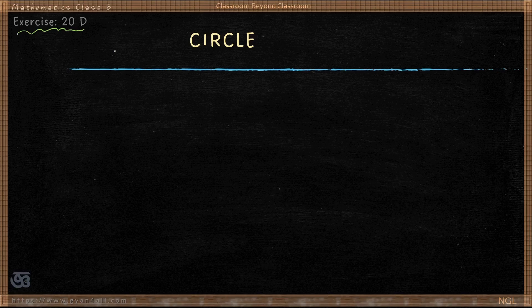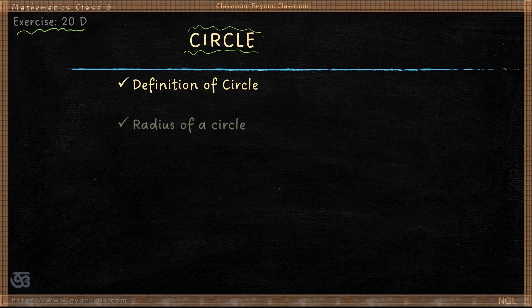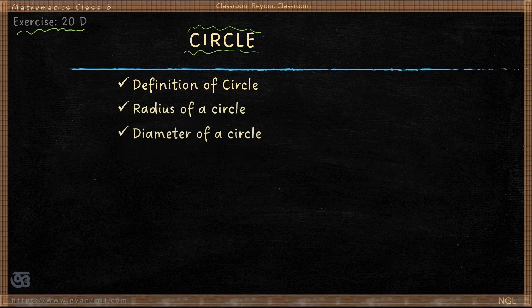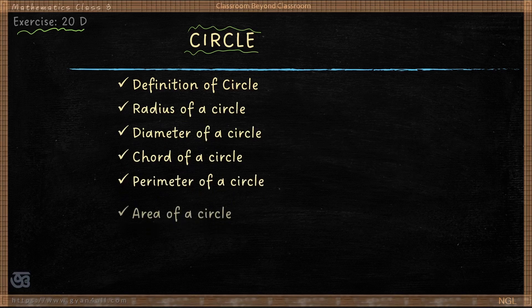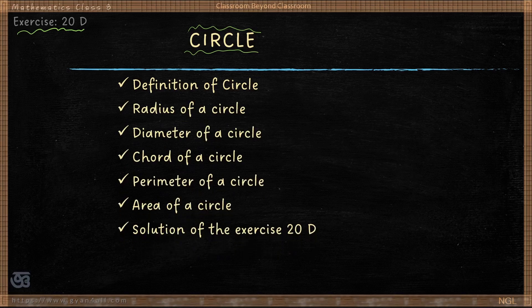Hello and welcome. This is an introductory video on Exercise 20D where we learn about circles — the definition of a circle, radius, diameter, chord, perimeter, and area of a circle. We will solve the problems from Exercise 20D in the next video.